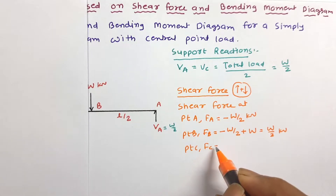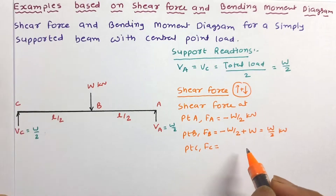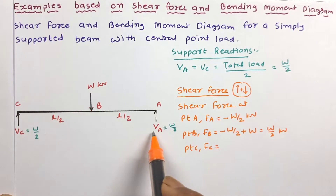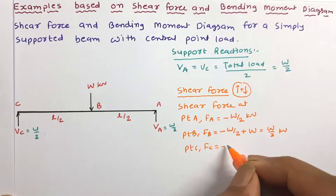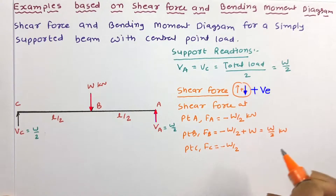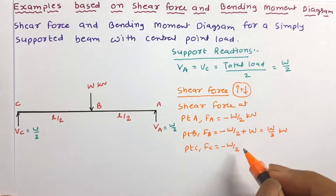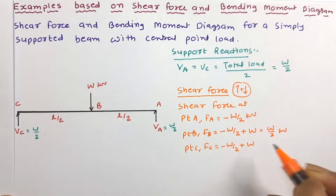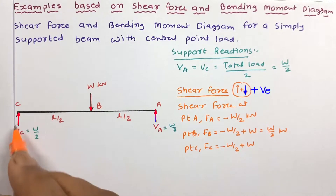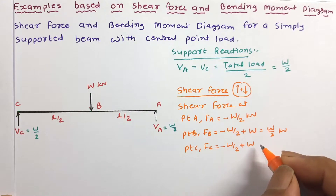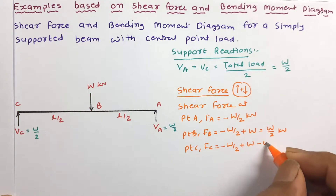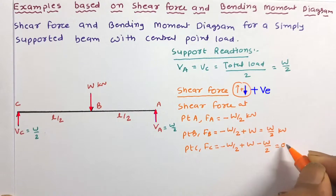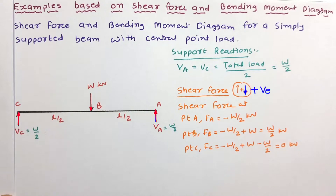At point C, starting from the right hand side: Va is minus W/2 as it is upward, plus W as it is downward, and minus Vc which is minus W/2 again as it is upward. So the shear force at C is 0 kN.